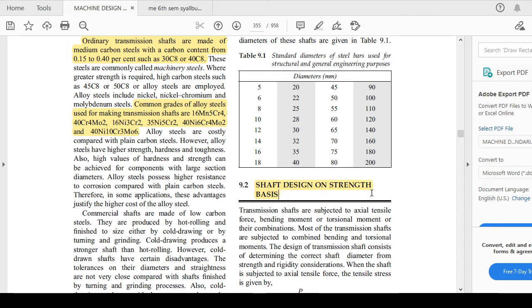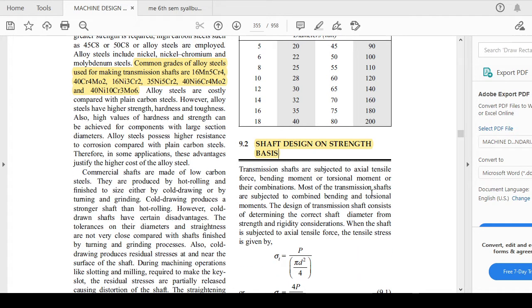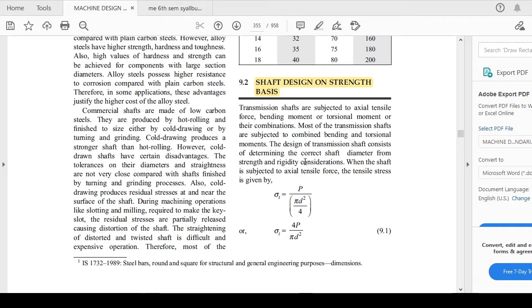You can design shaft on the basis of two criteria: first is strength criteria, second is rigidity criteria. Let us see how you can design any shaft or calculate the diameter of that shaft required as per the application on the basis of strength.